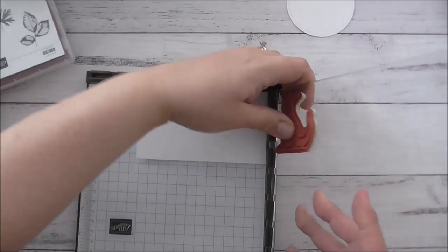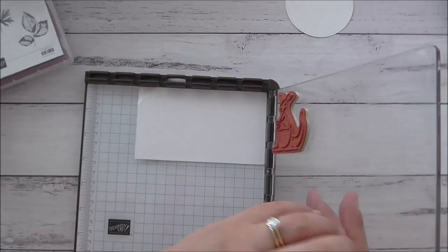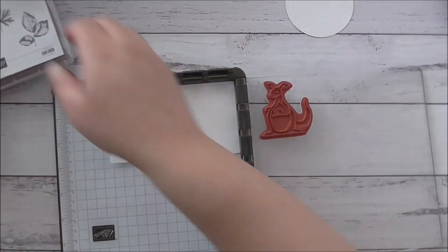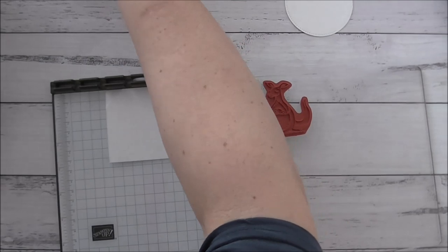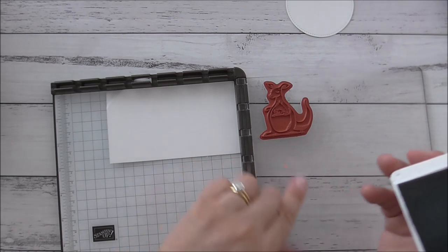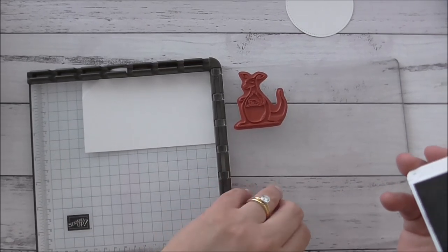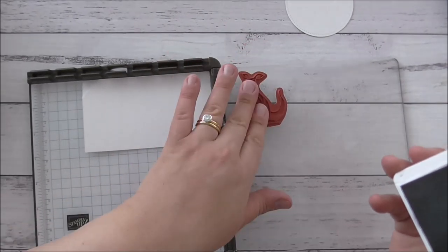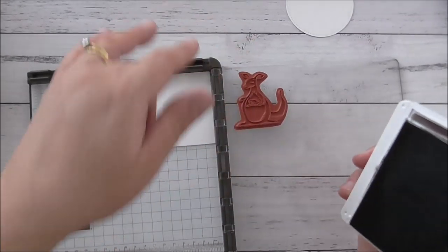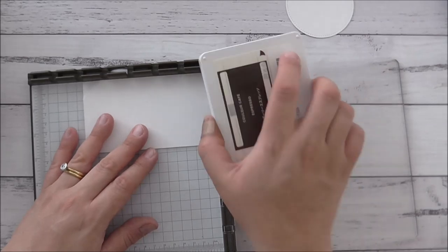And this is the older style cling. So I use clear grip on my Stamparatus or on any other stamping platform. I find that it helps to make them stick more. You can find those in the haberdashery store. And usually they help with making your rulers and things not stick. But they work great for our Stampin' Up older cling style.